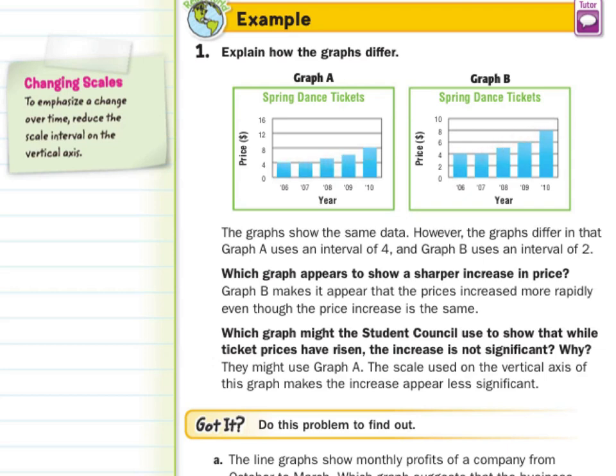Which graph might the student council use to show that while ticket prices have risen, the increase is not significant? Well, if you're trying to convince people that the price increase is not significant, we would use A. The scale used on the vertical axis makes the increase appear less significant. If you want your increases to appear less significant, make your intervals larger. If you want to make your increases look significant, you want to use smaller intervals.